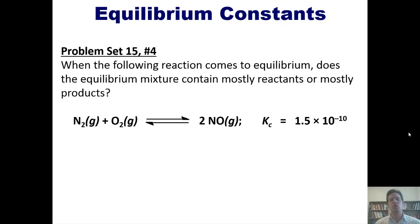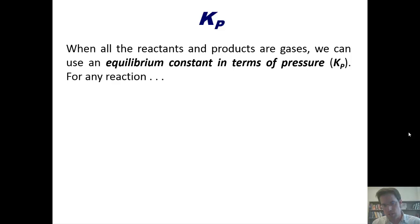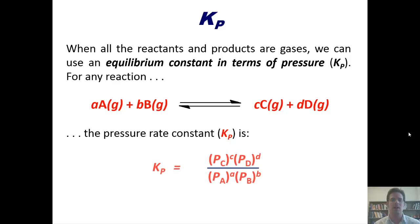We've now learned about Kc, which is the generic equilibrium constant. I'm now going to teach you about another equilibrium constant called Kp. Kim-possible! As it turns out, when all of your reactants and products are gases, you can actually come up with an equilibrium constant that's in terms of pressure. That is called Kp. Thus, for any reaction like this one, the pressure rate constant, or Kp, is equal to the individual pressures of each of the products, raised to exponents that are equal to their respective coefficients, divided by the individual pressures of the reactants, raised to exponents that are equal to their respective coefficients. That is Kp.